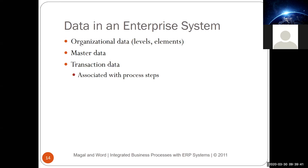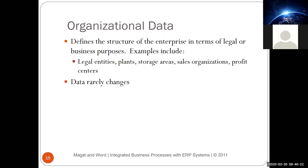The data in the enterprise ERP system is used to represent the physical system and process steps, such as making a purchase order or receiving goods. Organizational data is used to represent the structure of enterprises in terms of legal and business purposes. Examples of organizational structures include companies, subsidiaries, factories, warehouses, or storage areas in the same regions.